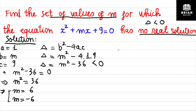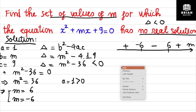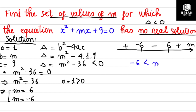Draw a number line with m = −6 on the left and m = 6 on the right. Since a = 1 > 0, the outer regions are positive and the middle region is negative. We care about where the expression is less than zero, which is the middle region, giving the final answer: −6 < m < 6.